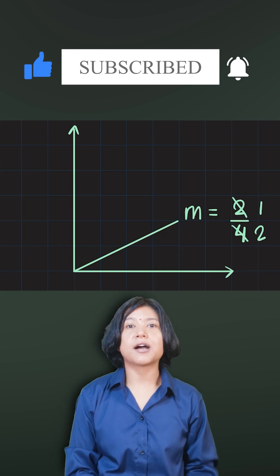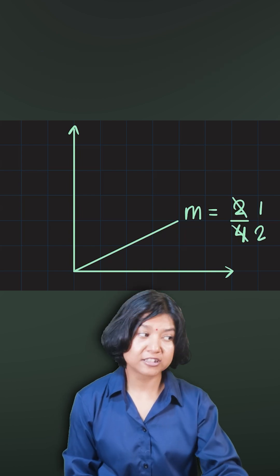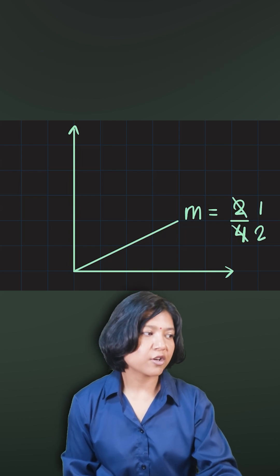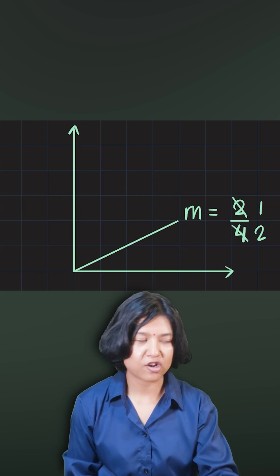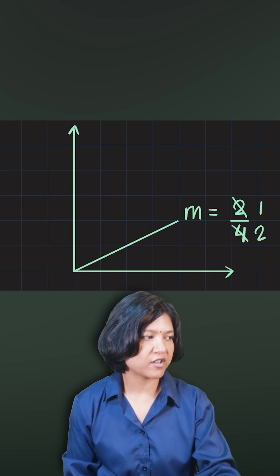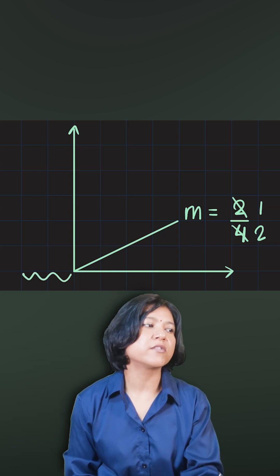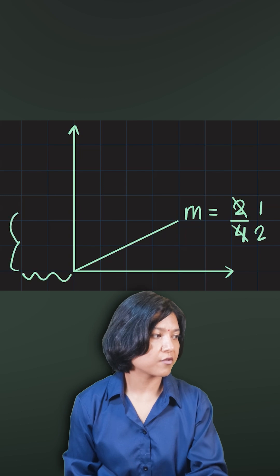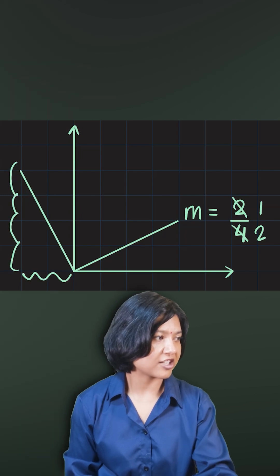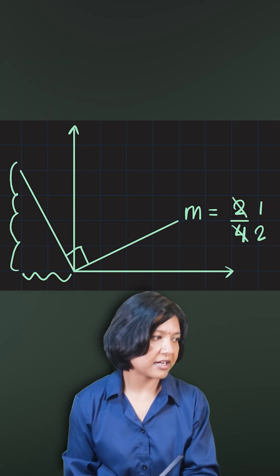Now let's think about a perpendicular line to this. To draw a perpendicular line, I'll be a little clever. What I'm going to do is flip the vertical and the horizontal distance. So this line was moving across two boxes vertical — I'm going to make that two boxes horizontal. And because it was moving four units horizontal, I'm going to make that four units vertical. So if you check it out, you get exactly 90 degrees.